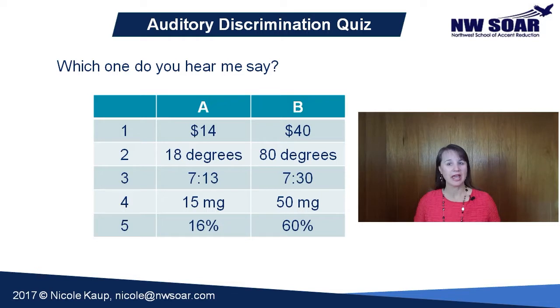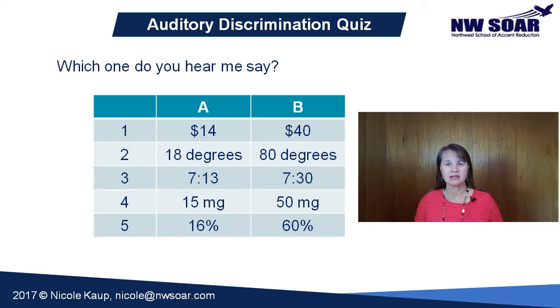Okay, how'd you do? The first one was B — $40.